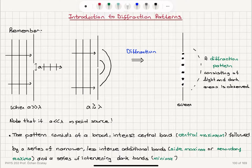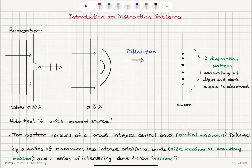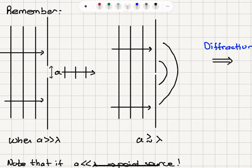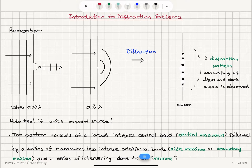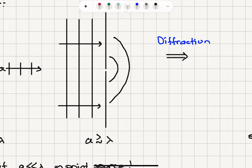Introduction to diffraction patterns. When we have plane light waves incident on a slit in a barrier, we have two possible outcomes. If the slit width is much greater than the wavelength, the ray approximation holds and the plane waves leave the slit undisturbed. But if the slit width is comparable to or less than lambda, the plane waves turn into spherical waves as they go through the opening.